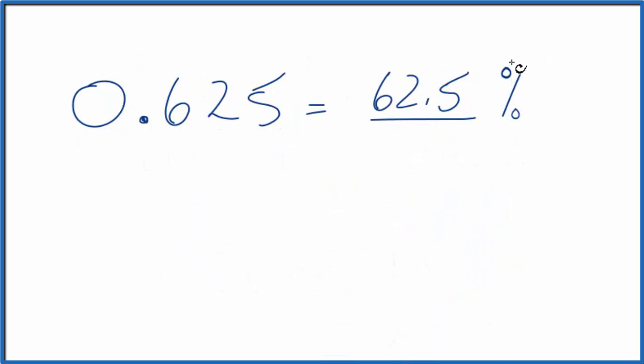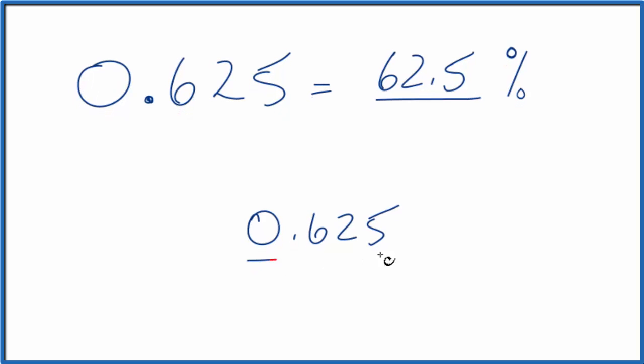You can think of the percentage sign as a part over 100. So if we take 0.625, let's call it 0.625 over 1. It's the same thing, we're just dividing by 1.